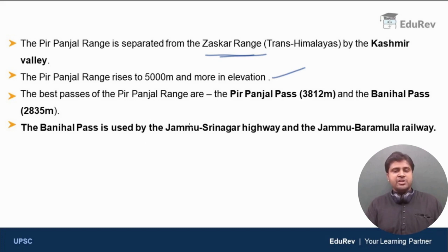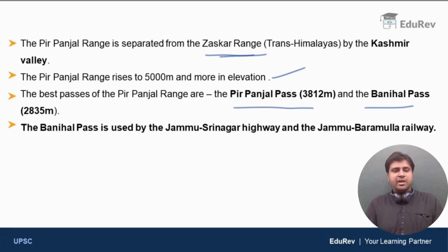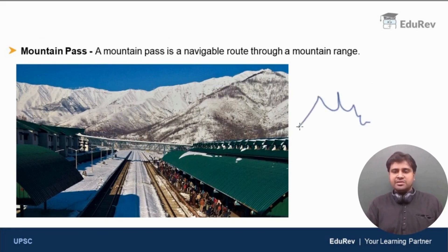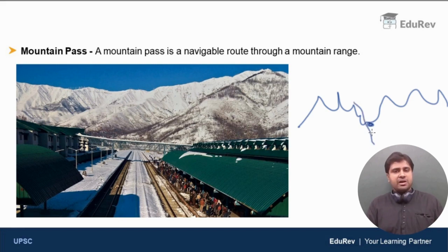The best passes of the Pir Panjal range are the Pir Panjal Pass and the Banihal Pass. These names are important because questions about mountain passes appear in prelims. A mountain pass is a navigable route through a mountain range — such paths through a mountain range through which you can cross over the range are nothing but mountain passes.